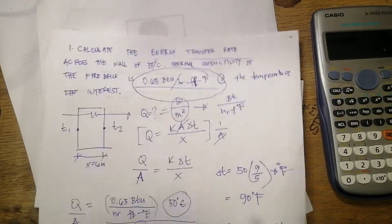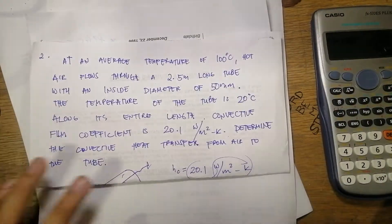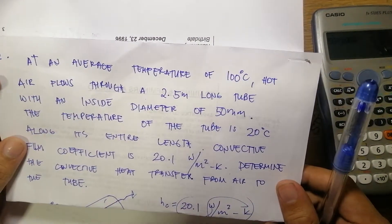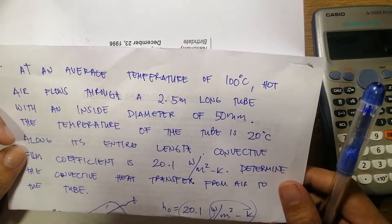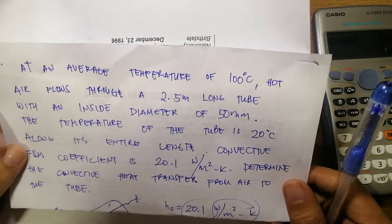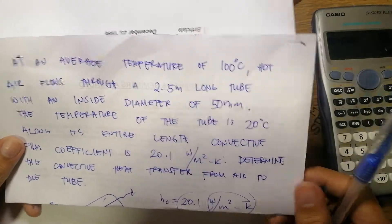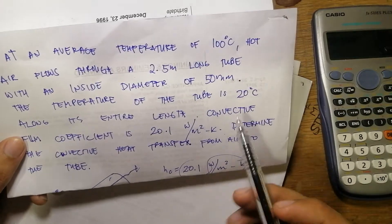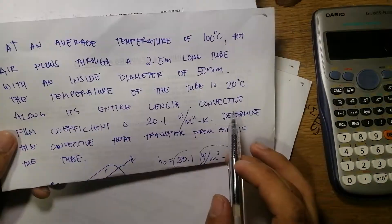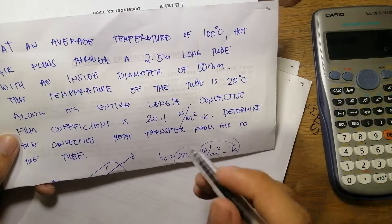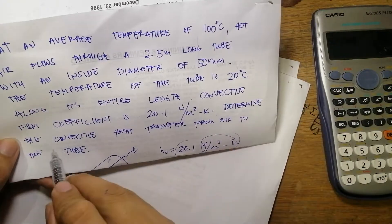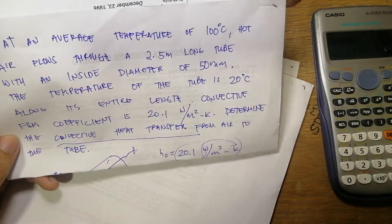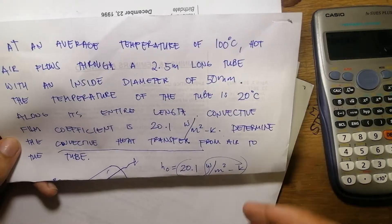At an average temperature of 100 degrees centigrade, hot air flows through a 2.5 meter long tube with an inside diameter of 50 mm. The temperature of the tube is 20 degrees centigrade along its entire length. The convective film coefficient is 20.1 watt per meter squared kelvin. Determine the convective heat transfer from air to the tube.